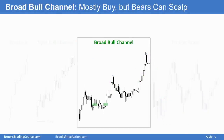The third pattern is a broad bull channel. It's a bull trend — it starts in the lower left, goes to the upper right, has higher highs and higher lows. However, unlike a tight bull channel, the pullbacks last five bars, ten bars, sometimes twenty bars. And sometimes the pullbacks are so deep the market at least temporarily becomes always-in-short.